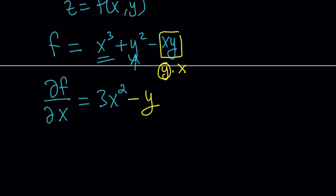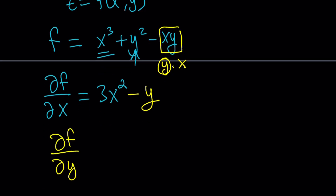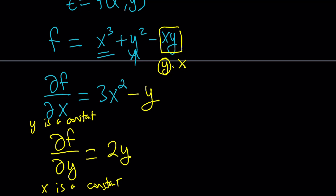If you wanted to differentiate the same function with respect to y, then we would just treat x as a constant. x cubed is going to be a constant, so its derivative is going to be zero. The derivative of y squared with respect to y is 2y. And then this time we're going to switch the roles — the derivative of xy is going to be minus x, because it's just the coefficient of y; y is to the first power.